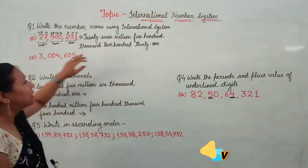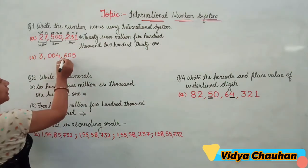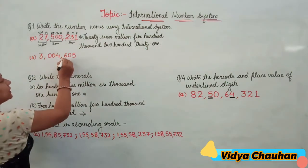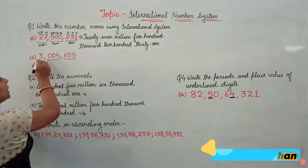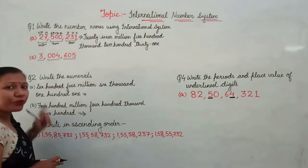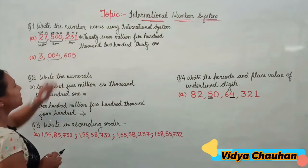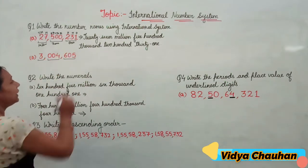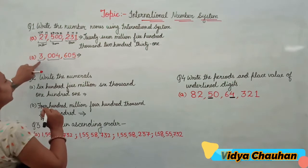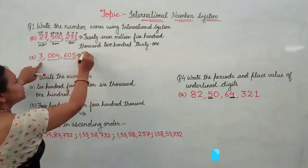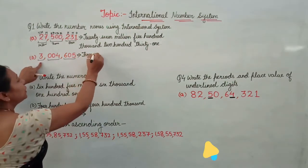Moving to the second numeral. Once again we have the ones group, thousands group, and the millions group. Can we write the name without even writing the place values? Yes. The first group gives us 3 million.